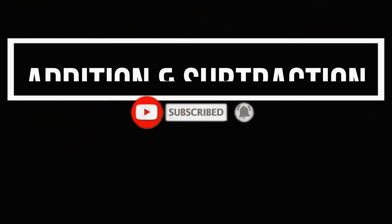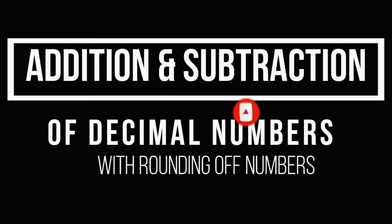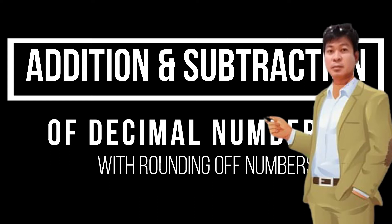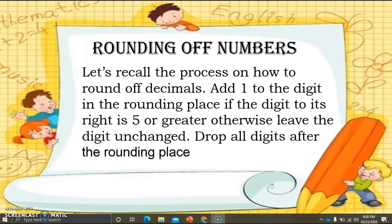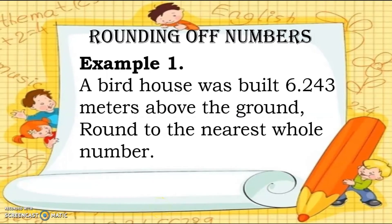Hi kids, this is Sir Romel and welcome to another episode of my video, which is about addition and subtraction of decimal numbers with rounding of numbers. Let's recall the process on how to round decimals: add one to the digit in the rounding place if the digit to its right is 5 or greater; otherwise, leave the digit unchanged and then drop all digits after the rounding place.